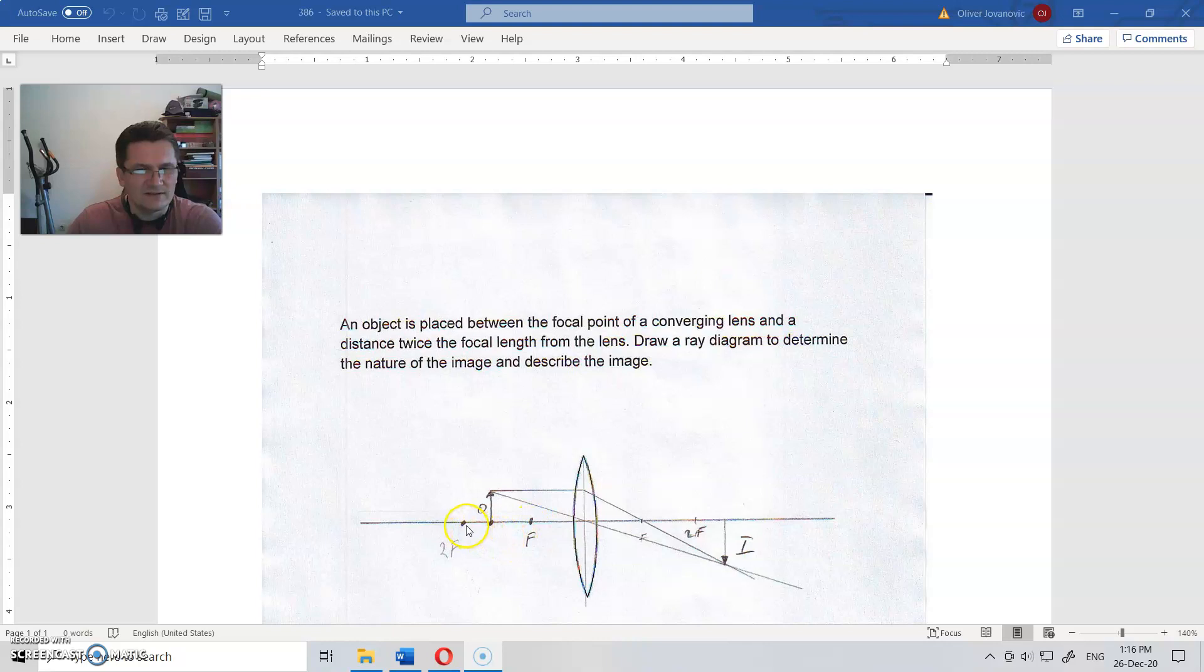This is twice of that distance, so this is the focal length, twice of that is from here to here. Draw a ray diagram to determine the nature of the image and describe the image.